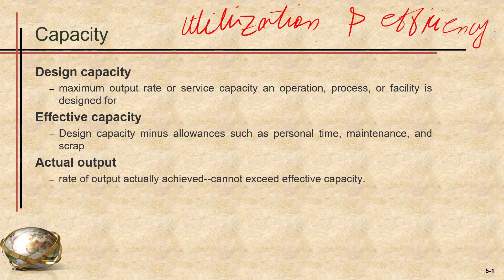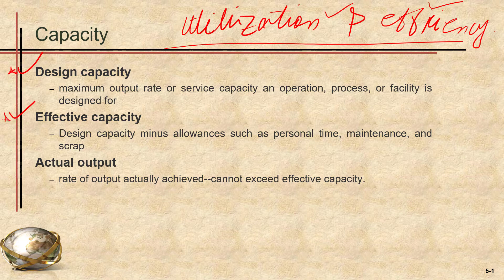The first thing we should understand is the difference between the design capacity and the effective capacity. Because the difference between utilization and efficiency depends on whether you are considering the design capacity or the effective capacity. Sometimes efficiency is also known as utilization with respect to effective capacity, while utilization is considered with respect to design capacity.